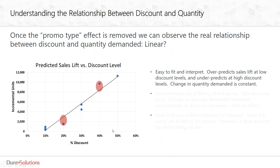Once you remove the BOGO effect, you can see there is a relationship: as the level of discount goes up, you sell more. But what kind of relationship? Is it linear? A linear regression is easy to fit and interpret, but at 20% we didn't do a very good job of predicting incremental sales, and at 40% we also under-predicted. More importantly, the change in quantity remains constant — meaning as you keep giving more and more discounts, this model will keep predicting more and more sales with no saturation effect. In reality, that's unrealistic.